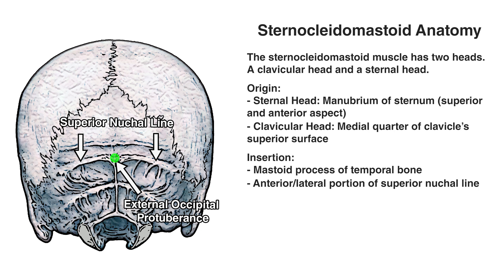The external occipital protuberance is where the nuchal ligament that runs down the back of the neck inserts onto. Either side of the external occipital protuberance would be the superior nuchal line, and that's going to be our insertion point of the sternocleidomastoid muscle.